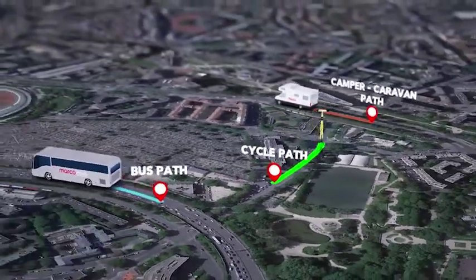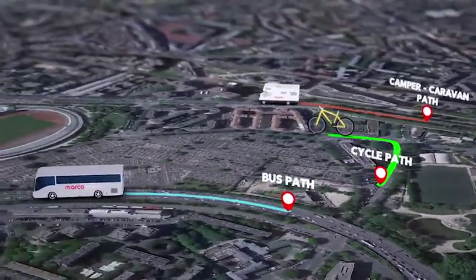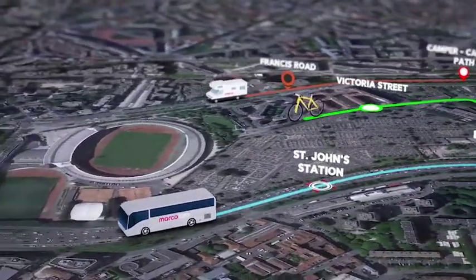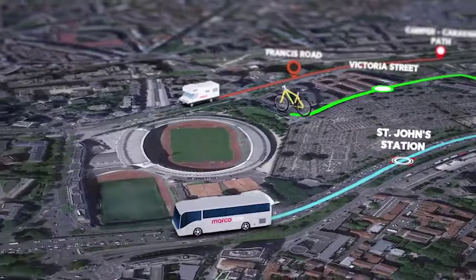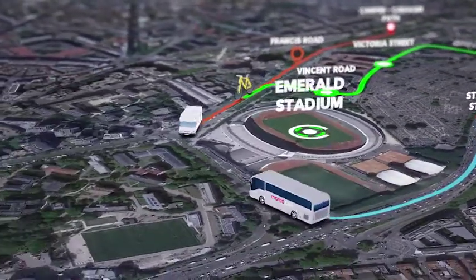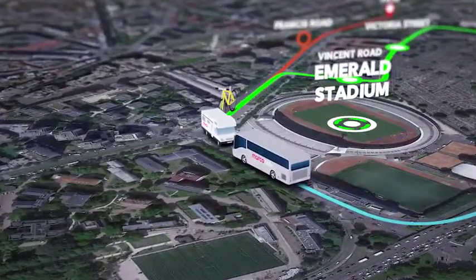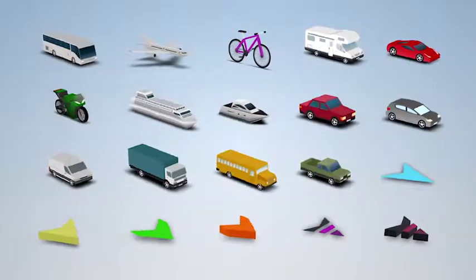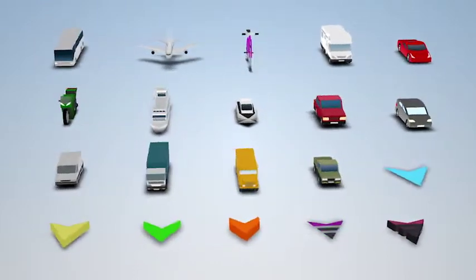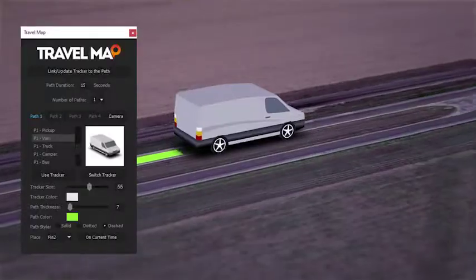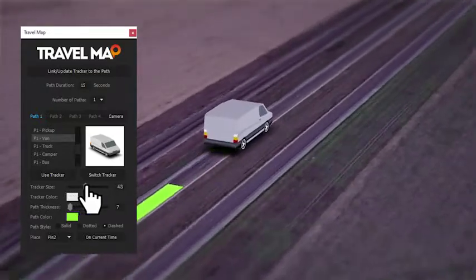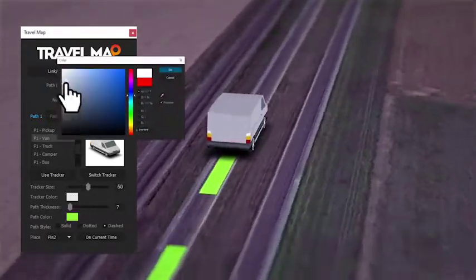That's Travel Map — a template and script for After Effects that allows you to easily create up to four different routes on your map using 3D vehicles. For each one of your paths, you can choose one of these included models. You can change their size and color, and you can insert your text or logo.